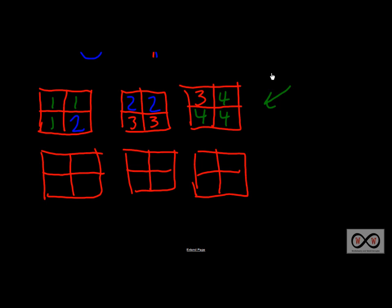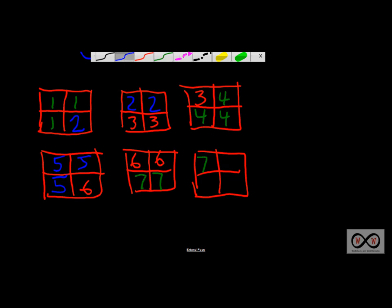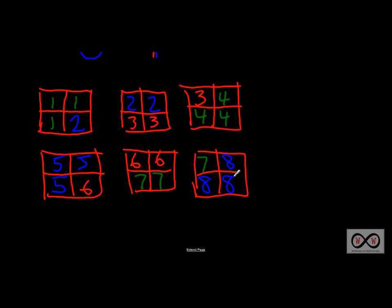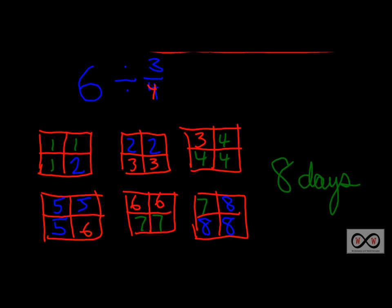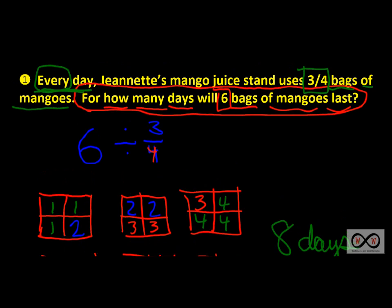Let's continue the pattern to show our work. On day five she used one, two, three-fourths. On day six, three-fourths. On day seven, three-fourths. And on day eight she used three-fourths of a bag just like every day. You can see right there it took eight days to use up all six bags of mangoes. So we can say eight days. That's our pictorial fraction model — three-fourths goes into six eight times, so it would take Jeanette's mango juice stand eight days to use up six bags.